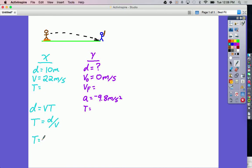And if I plug in my numbers, I should get that 10 meters divided by 22 meters per second gives me a time of 0.45 seconds, that's how long it will take the ball to get to home plate once it's been pitched.